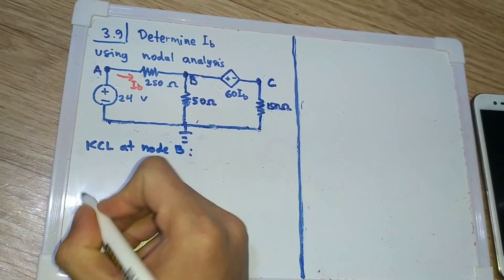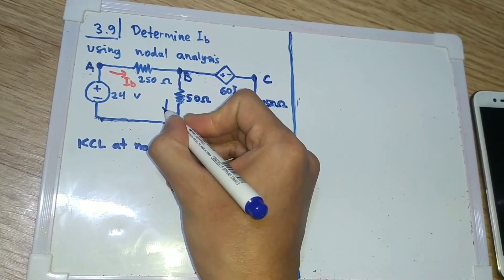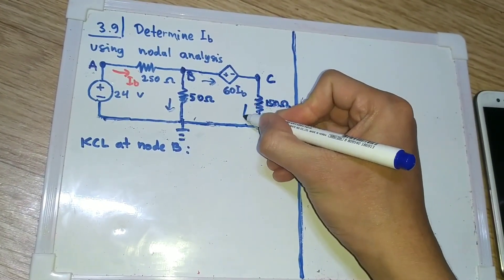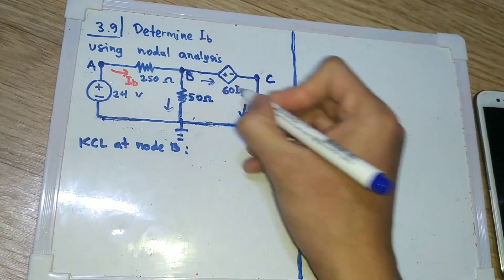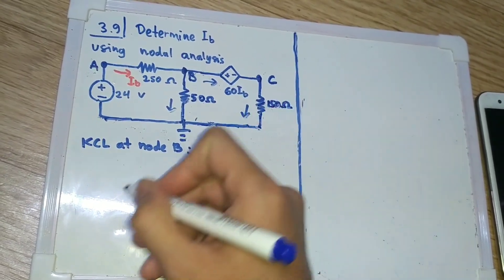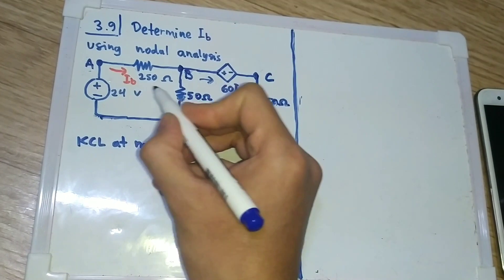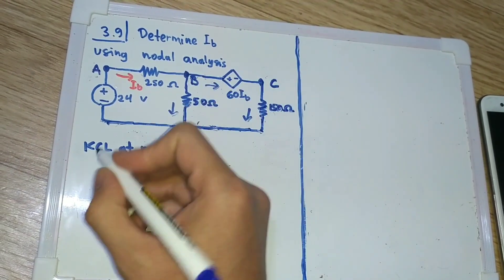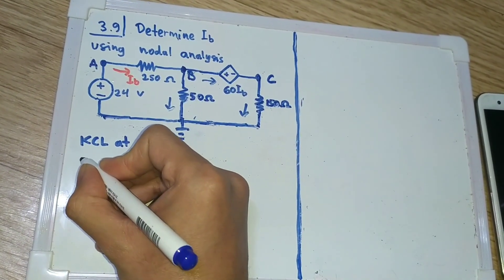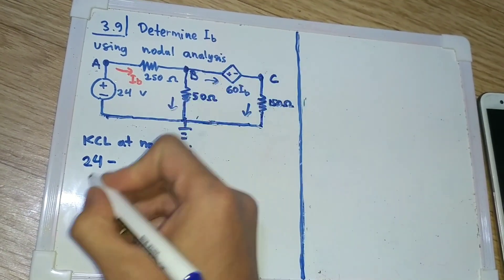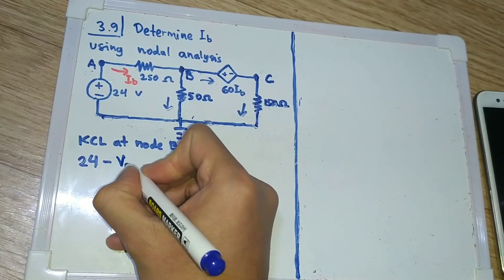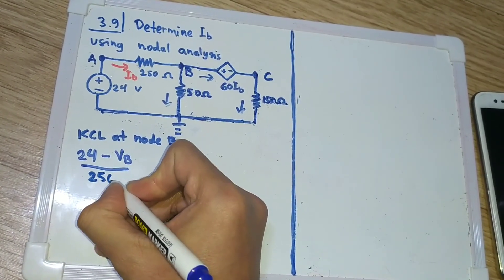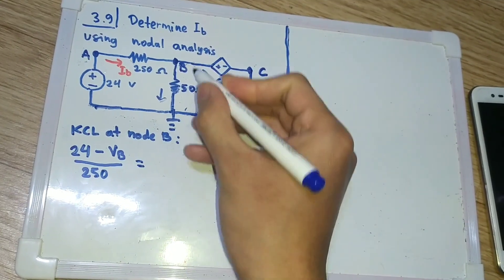Let's write KCL at node B. I will assume that the current here is going in this direction, and the other currents are going in their respective directions. Since it's a series circuit, the current that goes in equals the current that goes out. The current going in is only IB, so we have: (VA - VB) / 250, where VA is 24, minus VB divided by 250, and that equals the current going out.